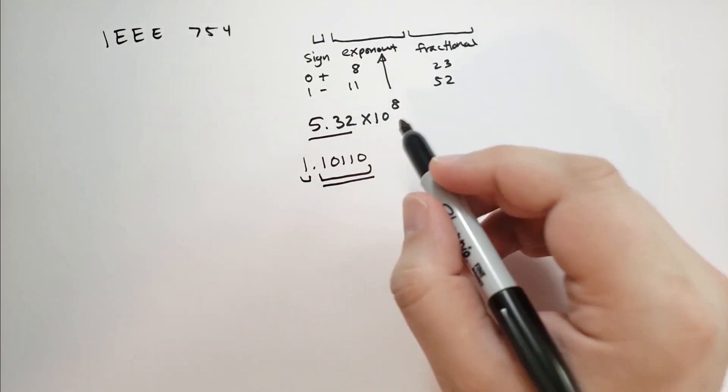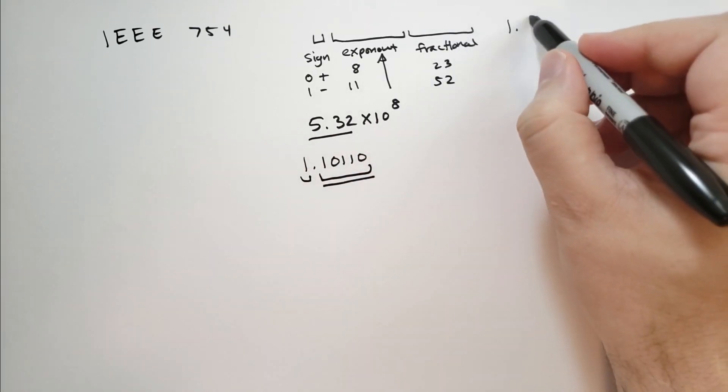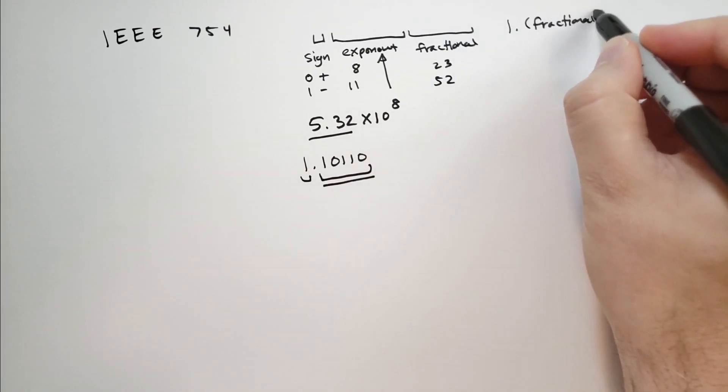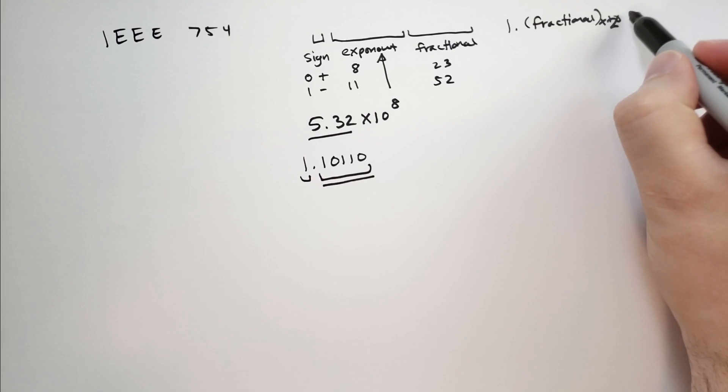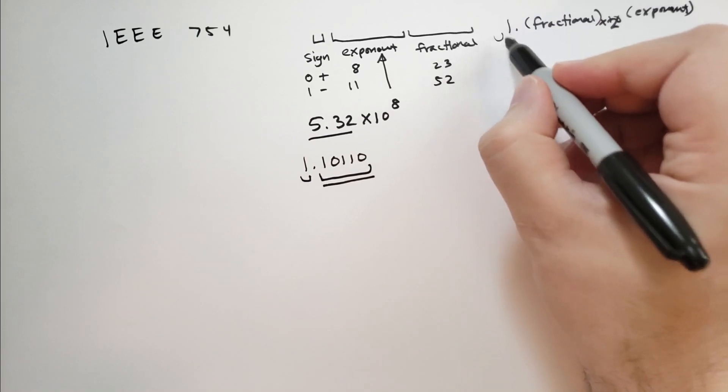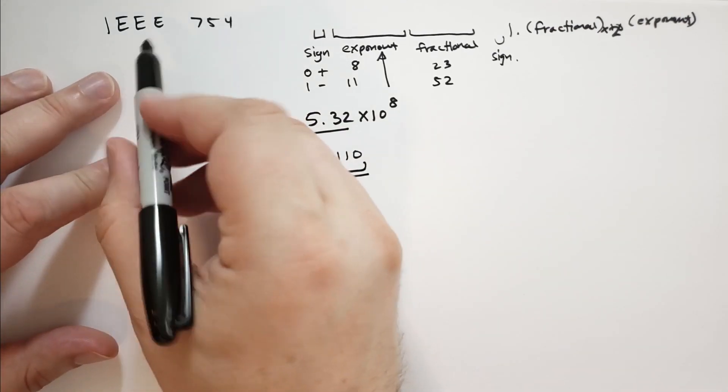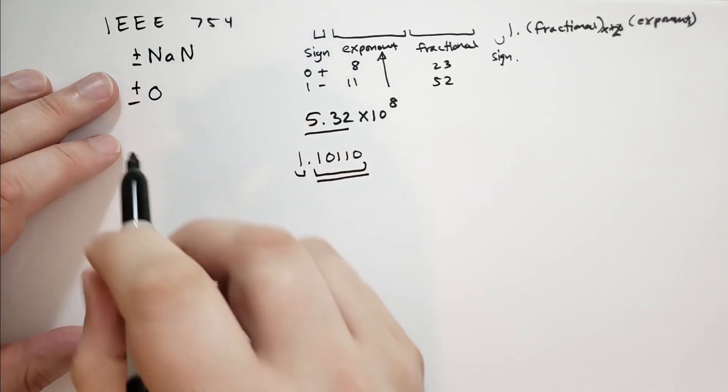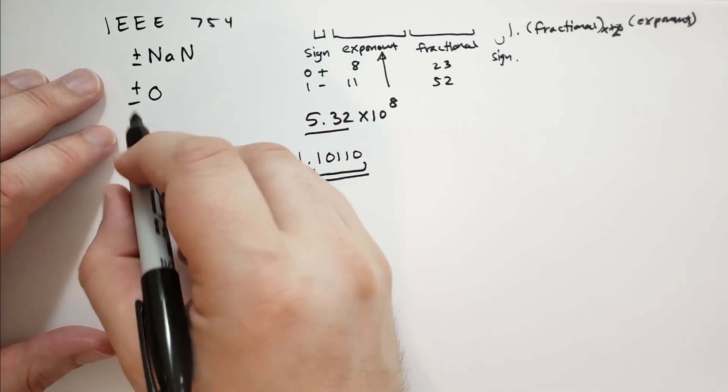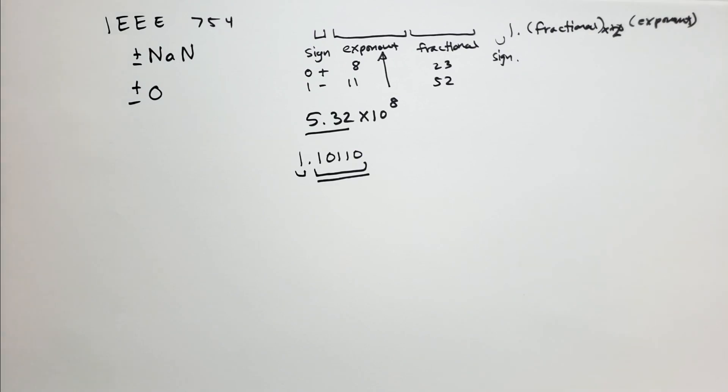So to construct a floating point number from its representation in binary, we're going to write one point, and then we're going to take the fractional bits. And then we're going to take that raised to the power of - so times 10 or times 2 to the power of the exponent. And then we're also going to have the sign there. And that should give us all of the floating point numbers. Now, IEEE 754 also specifies some other numbers. There's NaN, which can be plus or minus. It also distinguishes between plus and minus zero. And I believe there are some other special numbers that rarely arise. They only arise when you're doing something wrong with the floating point numbers.